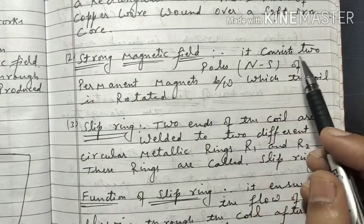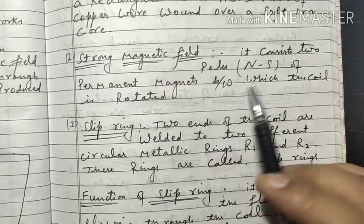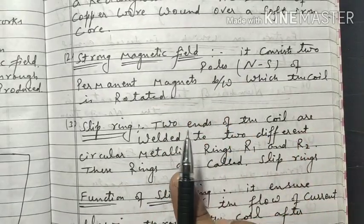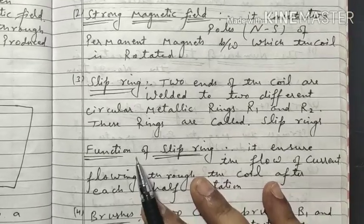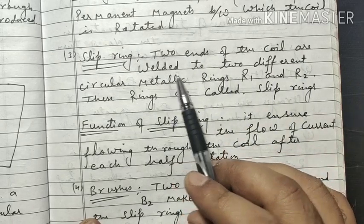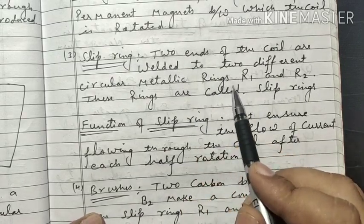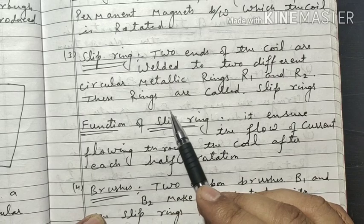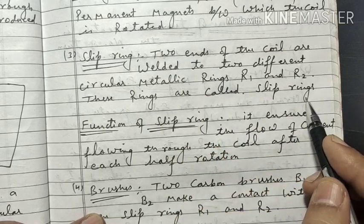Second is the strong magnetic field. It consists of two poles — North and South — of a permanent magnet, between which the coil is rotated. Third is the slip ring. The two ends of the coil are welded to two different circular metallic rings R1 and R2. These rings are called slip rings because they continuously slip against the brushes.